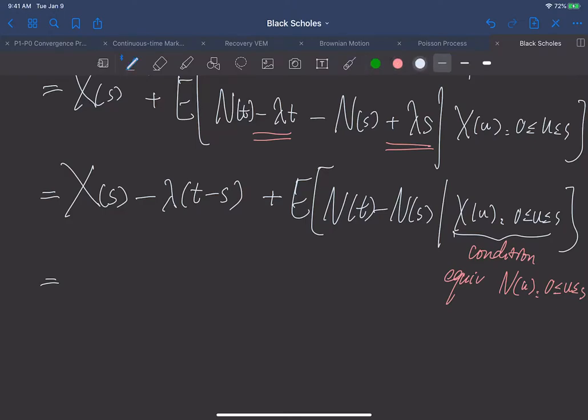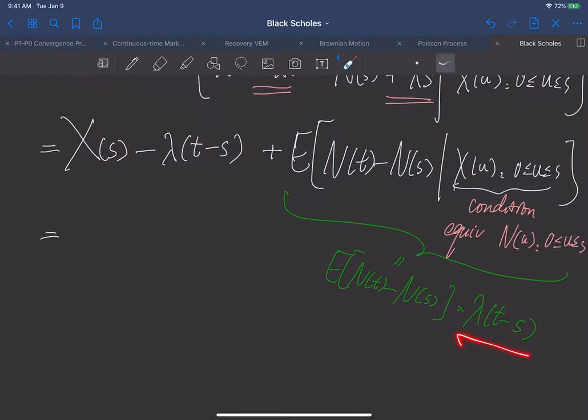We'll use independent increment. As a result, this term is nothing but expectation without the condition. This is a Poisson process and we use stationary increment. This is nothing but λ(t - s). Now we compare the terms. This term will cancel with this. As a result, we've reached our conclusion this is X(s).